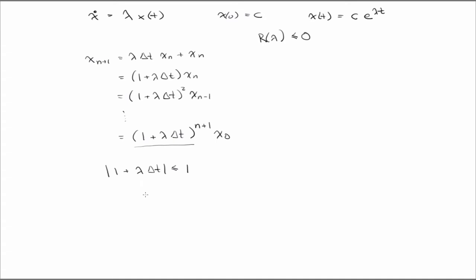And so if we solve this for delta t, we end up with this. So in order for this explicit scheme to be stable, this has to hold,